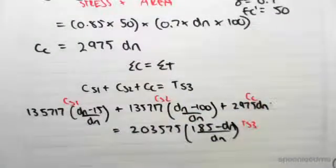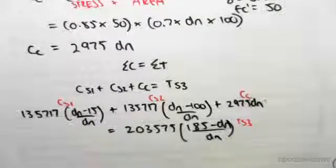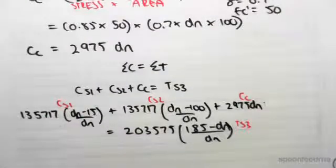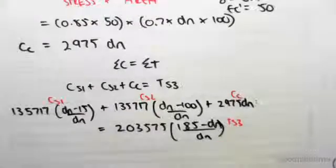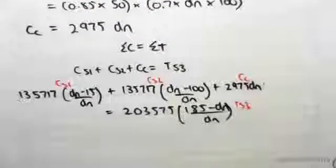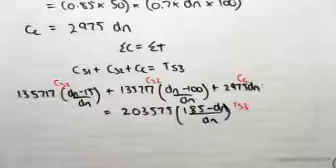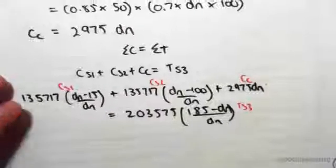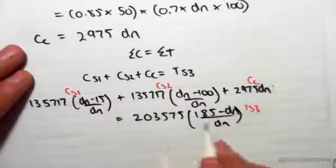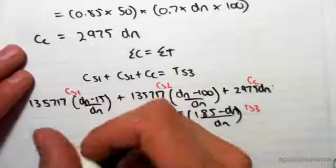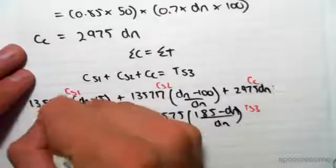What we're going to do now is multiply through by dn and expand out the brackets. If you want to skip straight to the answer, you can fast forward, but I'm actually going to do the maths for this case. So if we expand this out and multiply through by dn first.